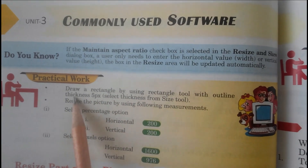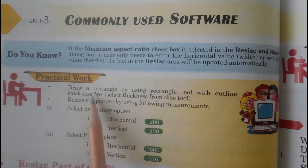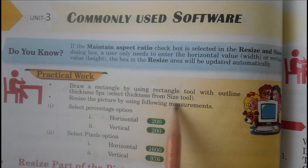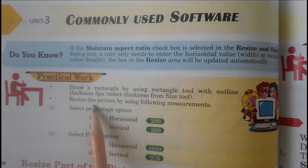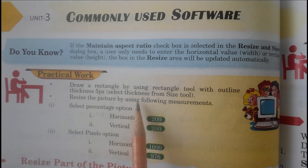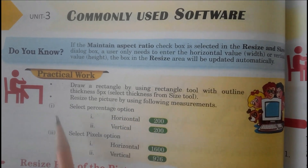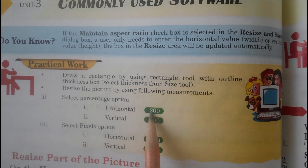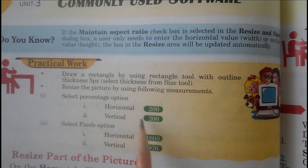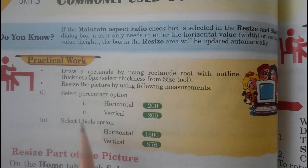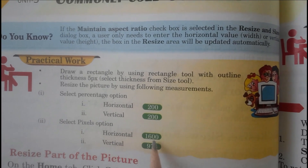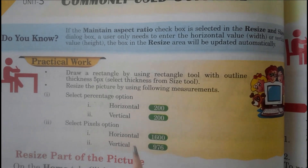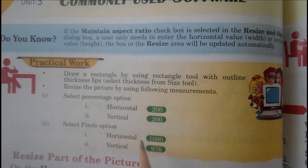Practical work: draw a rectangle using the Rectangle tool with outline thickness 5 pixels, selecting thickness from the Size tool. Resize the picture using the following measurements: first, select Percentage option — Horizontal 200, Vertical 200; then select Pixels option — Horizontal 1600, Vertical 976. Students, do it by yourself.